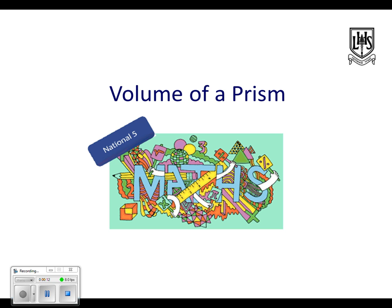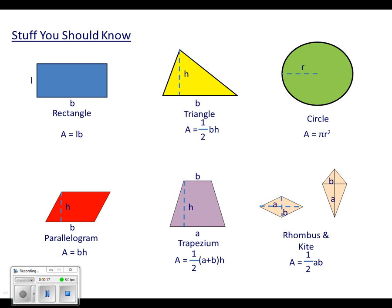Before we start, there's just a couple of things I want to look at in terms of what we should know coming in. Here we've got six areas that I think you should know. The top three especially - the rectangle, the triangle, and the circle - are three ones that I would think you should have to know inside out. You need to know how to do these and it's not a case of having to think about it, it's just second nature.